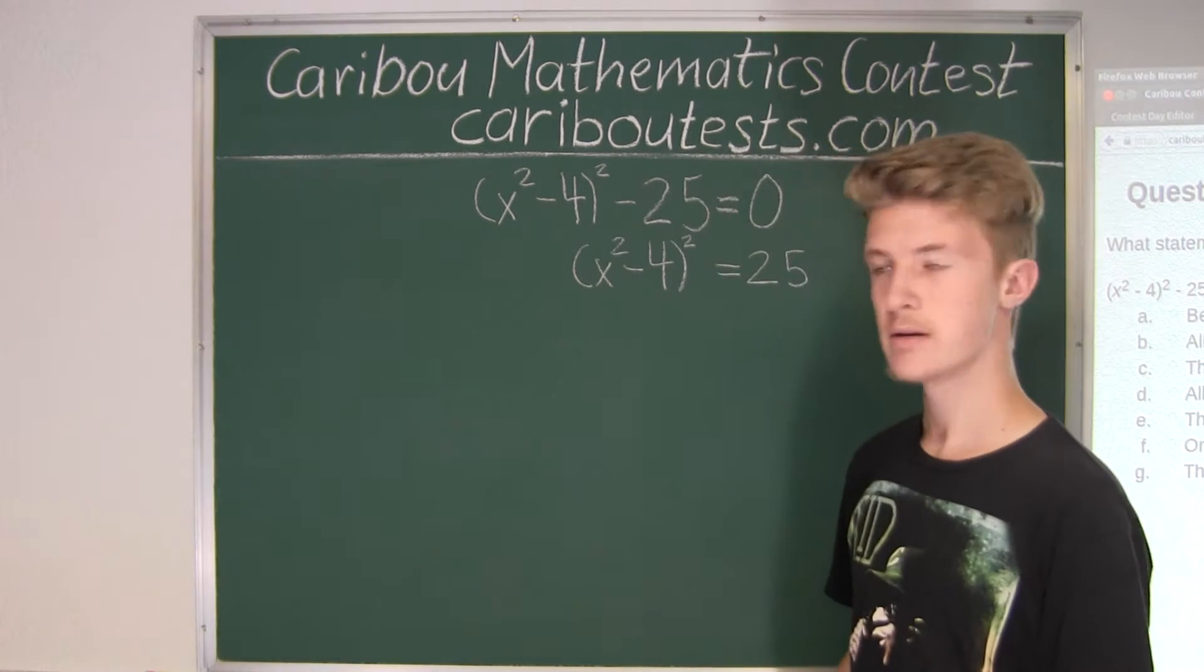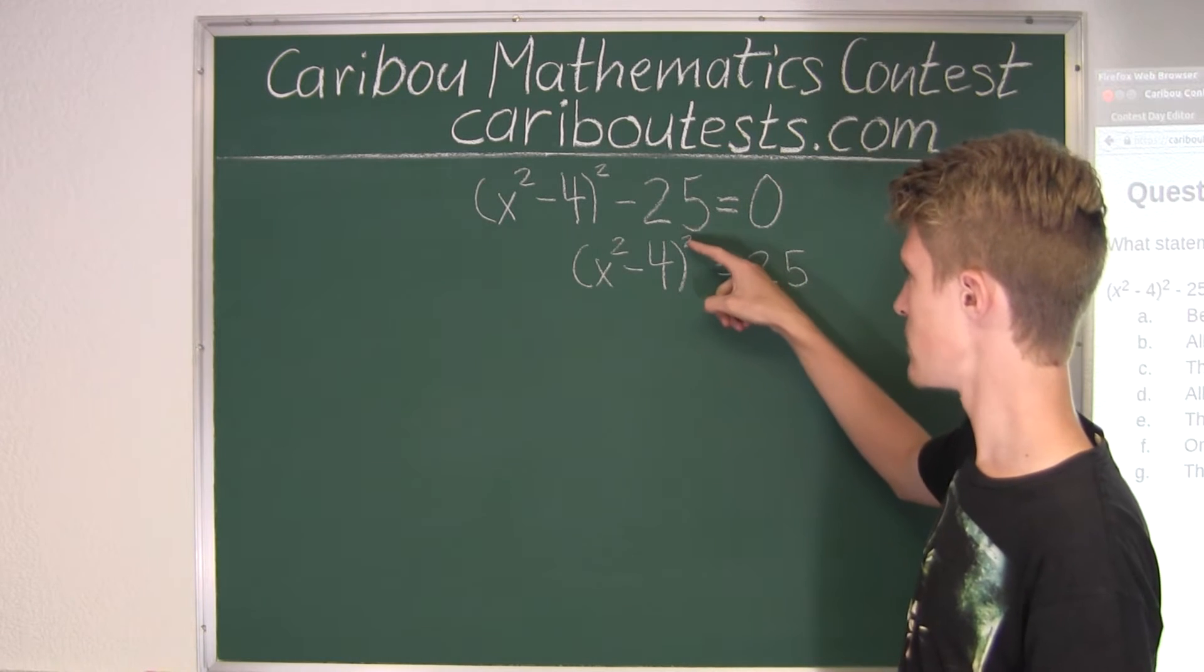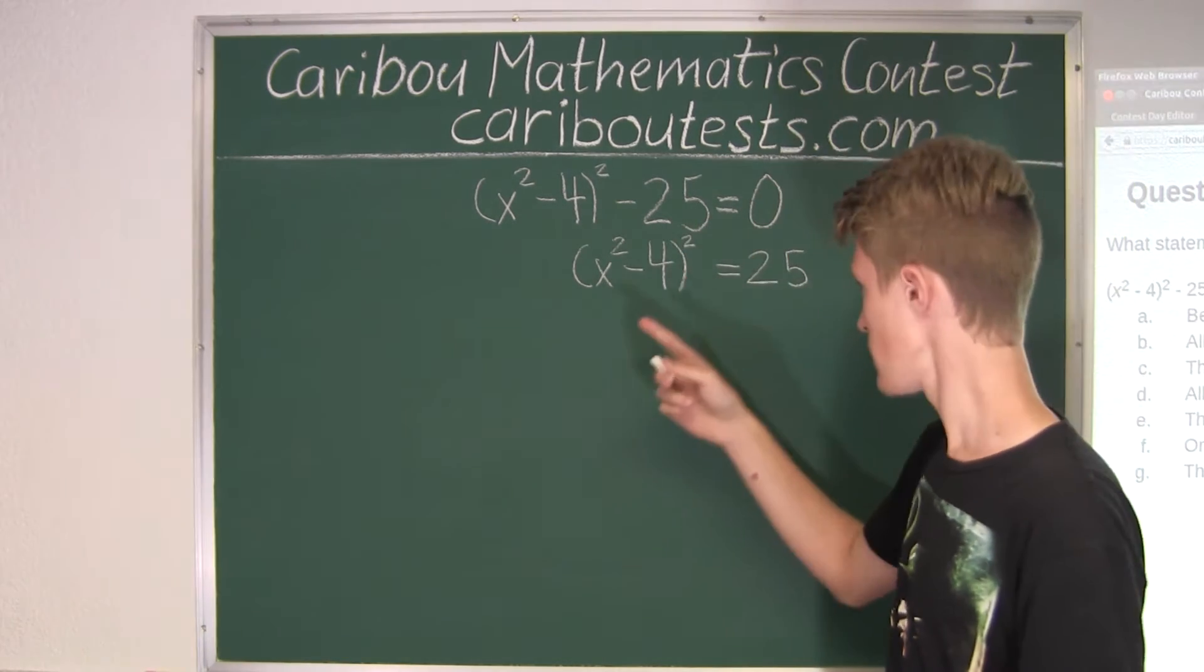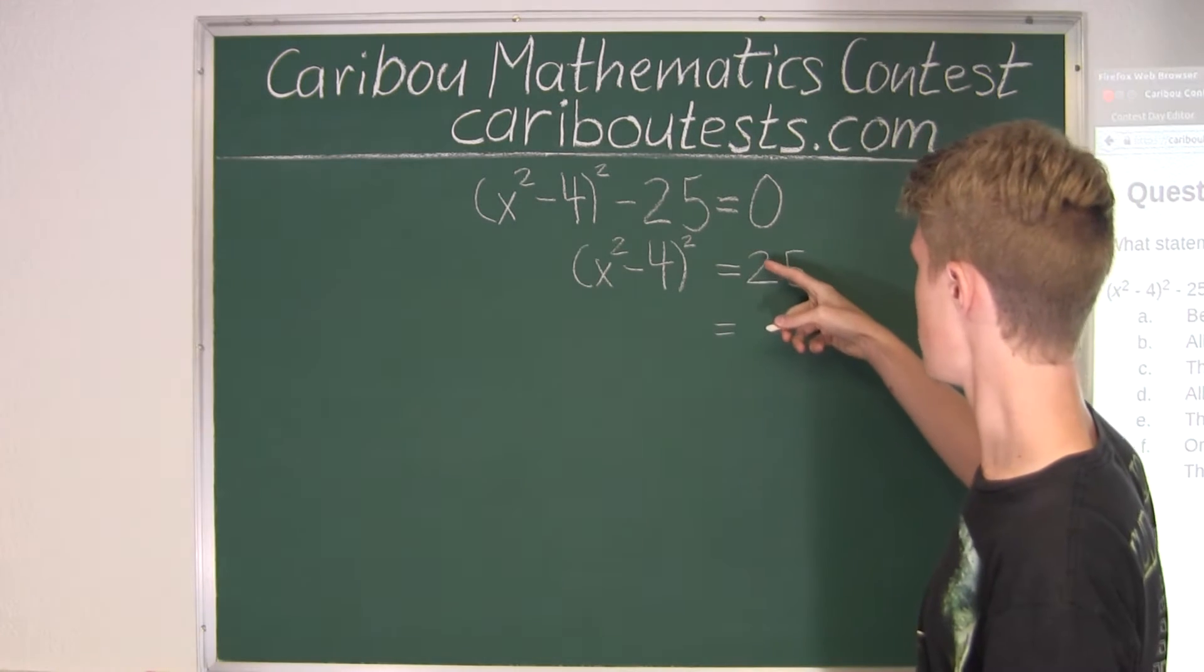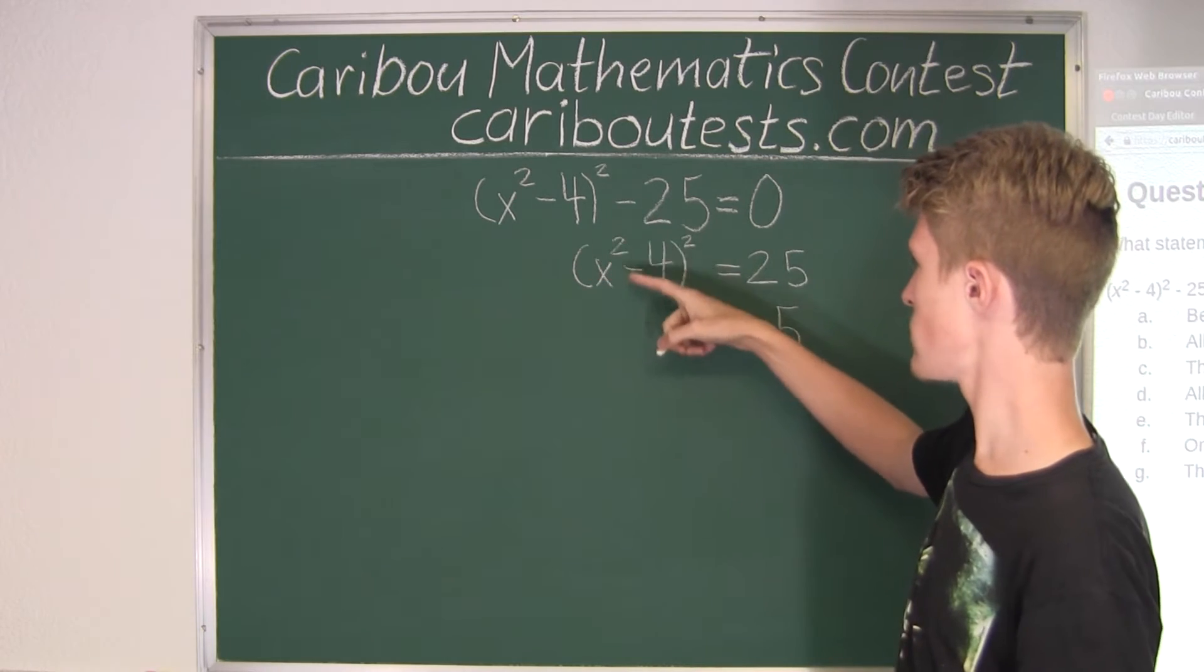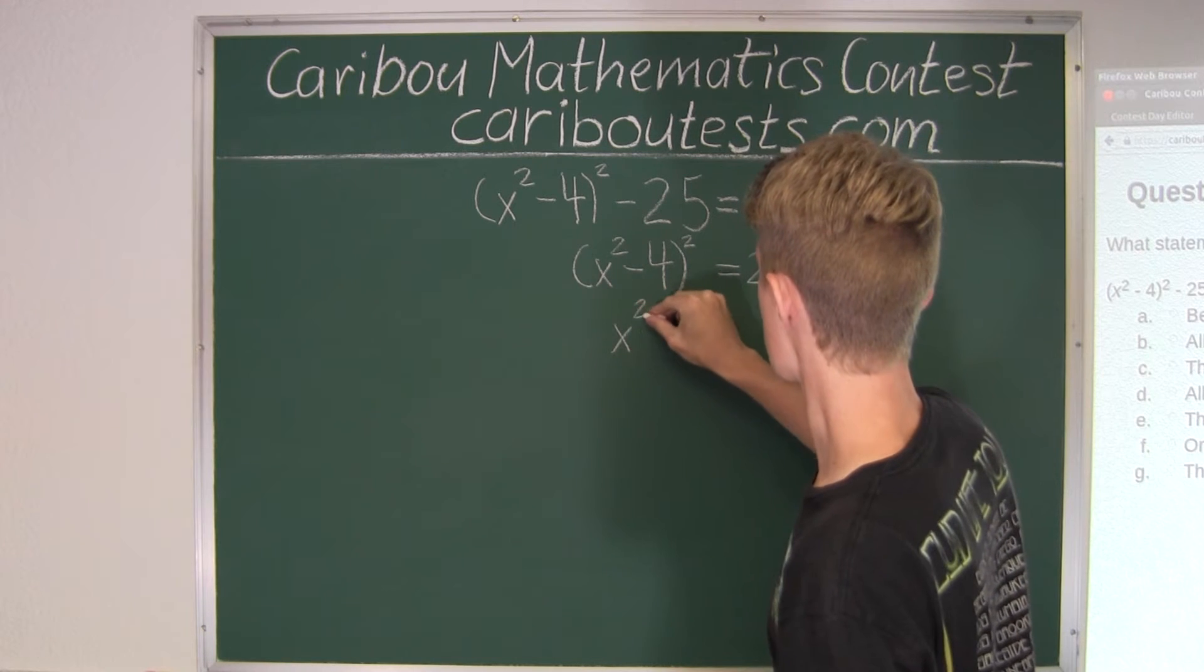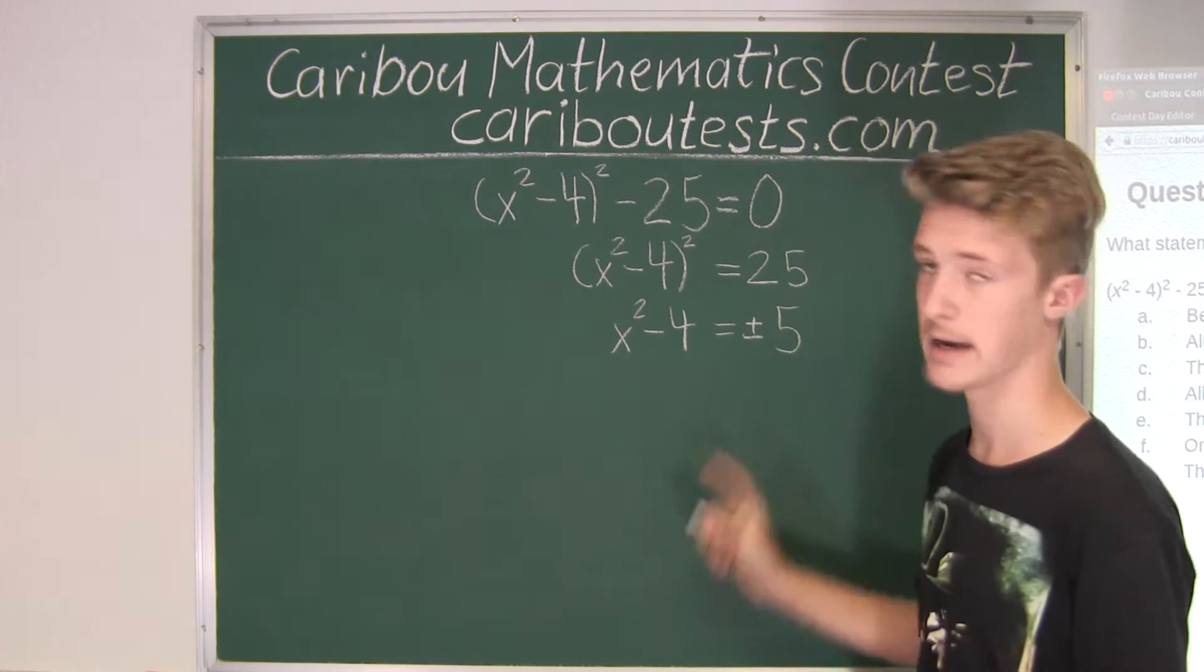Alright, so as we can see, x squared minus 4 is in brackets, and that's squared. But we want to get rid of that power of 2. So now we will find the square root. The square root of 25 is 5. But since x squared minus 4 is in brackets, we know that can be negative. So therefore, it can be either positive 5 or also negative 5.